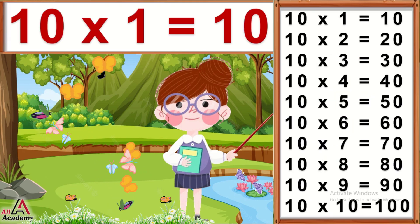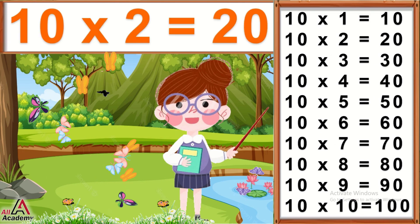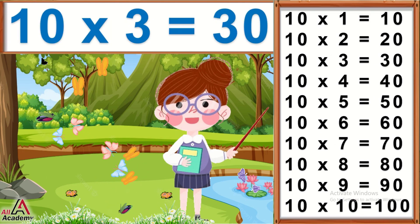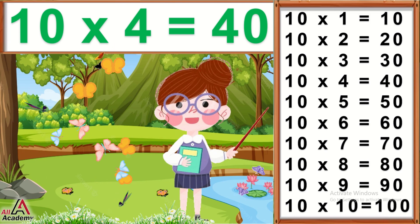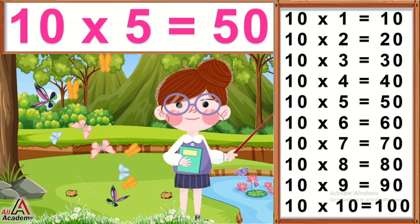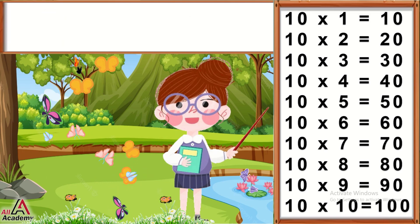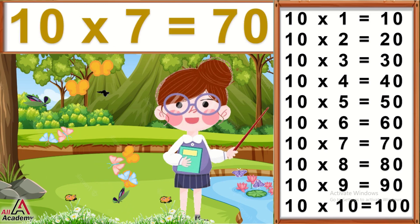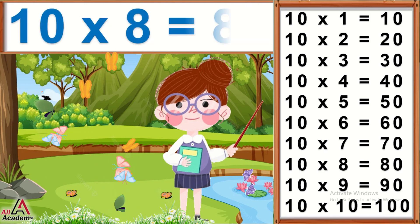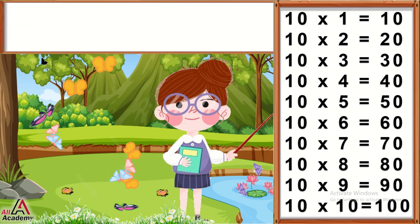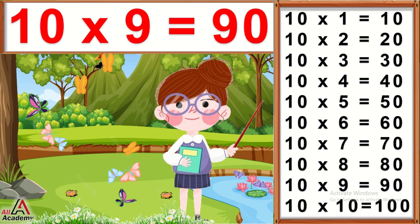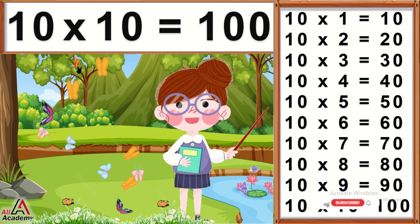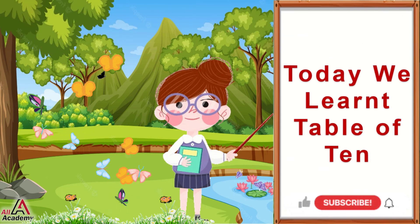10×1=10, 10×2=20, 10×3=30, 10×4=40, 10×5=50, 10×6=60, 10×7=70, 10×8=80, 10×9=90, 10×10=100. Today we learned the table of 10.